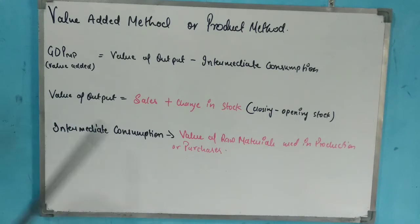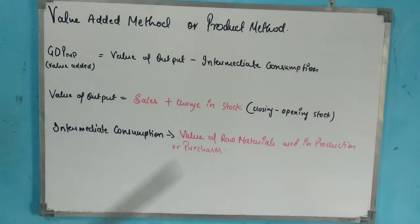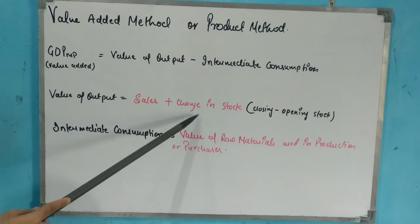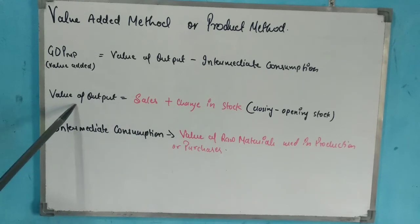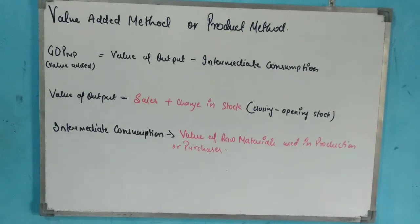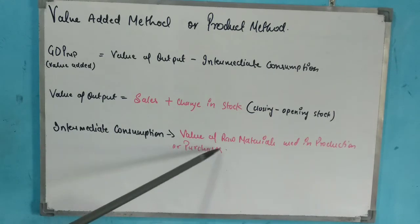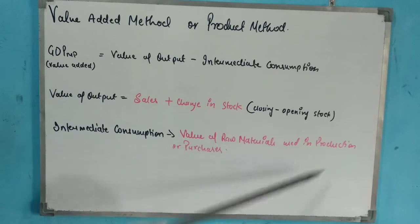What is the value of output? Value of output is Sales plus Change in Stock. Intermediate consumption refers to the value of raw material used in production.